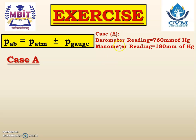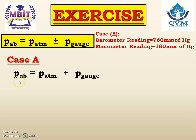For case A, barometer reading is given and manometer reading is given. As the manometer reading is given, it is a positive pressure, and so we have to use the plus sign. Absolute pressure equals atmospheric pressure plus gauge pressure. Both the barometer reading and manometer reading are in the same unit — millimeter of Hg — so we can do the summation.